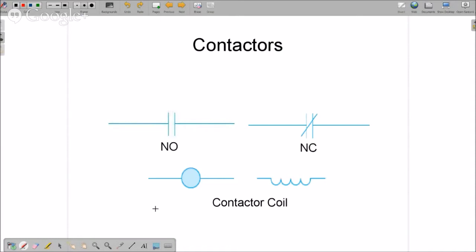There are two types of contacts on contactors: NO, which means normally open, and NC, which means normally closed. What that means is when there is no power applied to the contactor coil, this is the state that these contacts are in.